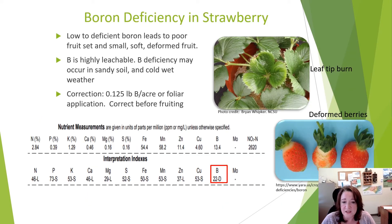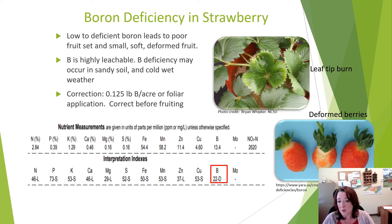Boron deficiency in strawberry is also fairly common in North Carolina. It results in poor fruit set and small, soft, deformed fruit. If boron is deficient, as indicated in the example report, the corrective action should be done before fruiting because adequate boron is needed for healthy flower production. When applying boron, the line between sufficient and toxic is very narrow, as we will see in the next slide.